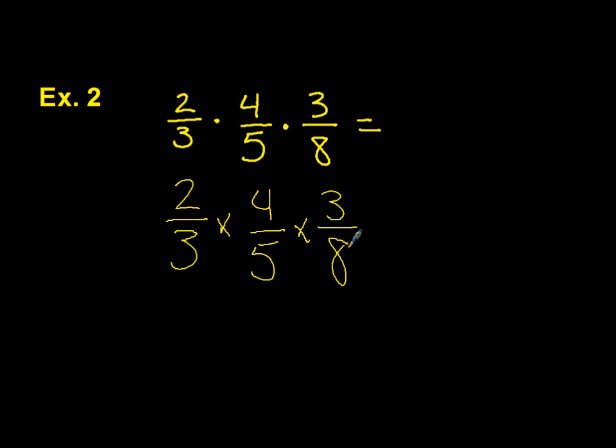And then I'm going to look for some cross-cancelling. Once again, we have our threes here. This time we have four and eight, both divisible by four. And I also have, if you look here, two and two.